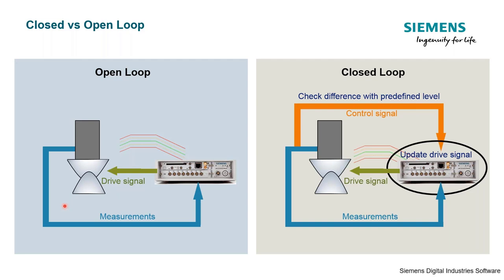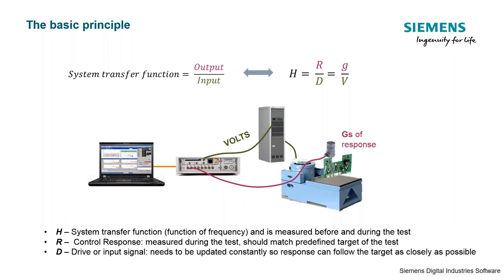We can also account for resonances, harmonic distortion, and similar effects. The system transfer function is a measure of the output over the input. Thinking in terms of the shaker: the input is volts and the output is the g's of response. Depending on the test profile and the structural dynamics of the shaker and test object, the drive will update to keep us within our profile. At a resonant frequency we would need to output less excitation — less voltage — whereas at an anti-resonance we would need to output more voltage. We characterize the system and use the system transfer function to determine how many volts to excite at every frequency.